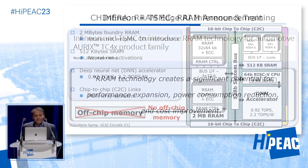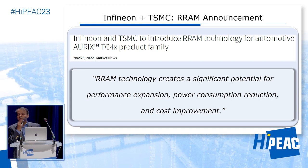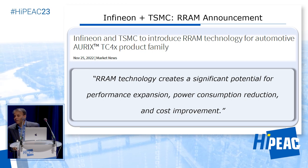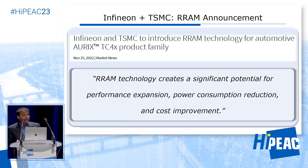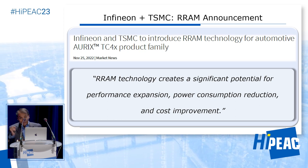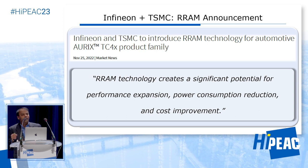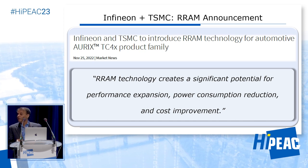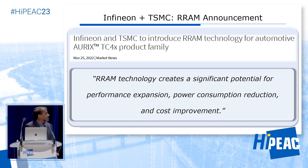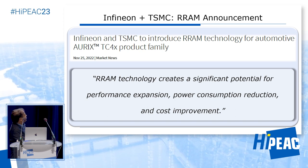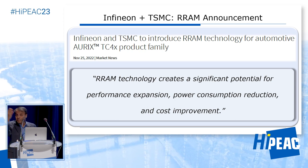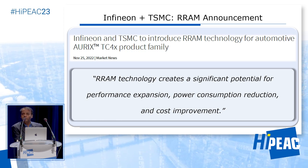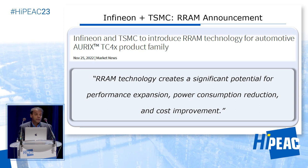Before that, I'm really excited about this announcement that Infineon and TSMC made last November. They announced that for their automotive microcontrollers, they are going to replace their embedded flash with resistive RAM. This is an active project — by the end of 2023 or so, they would have this available commercially. They talk about this being crucial for performance expansion and power consumption reduction — remember the 10x I was talking about earlier. This is actually wonderful news for the whole community working on nanosystems.